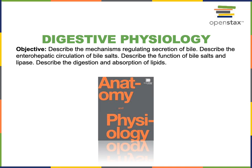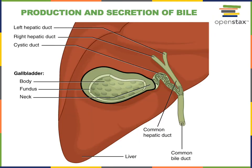In this video I will describe the mechanisms regulating the secretion of bile, describe the enterohepatic circulation of bile salts, describe the function of bile salts and lipase, and then describe the digestion and absorption of lipids. Bile is an exocrine secretion produced by hepatocytes in the liver. Bile is secreted through hepatic ducts and then stored in the gallbladder. Within the gallbladder bile becomes concentrated, and then bile will exit the gallbladder through the cystic duct and common bile duct where it will travel down into the duodenum.